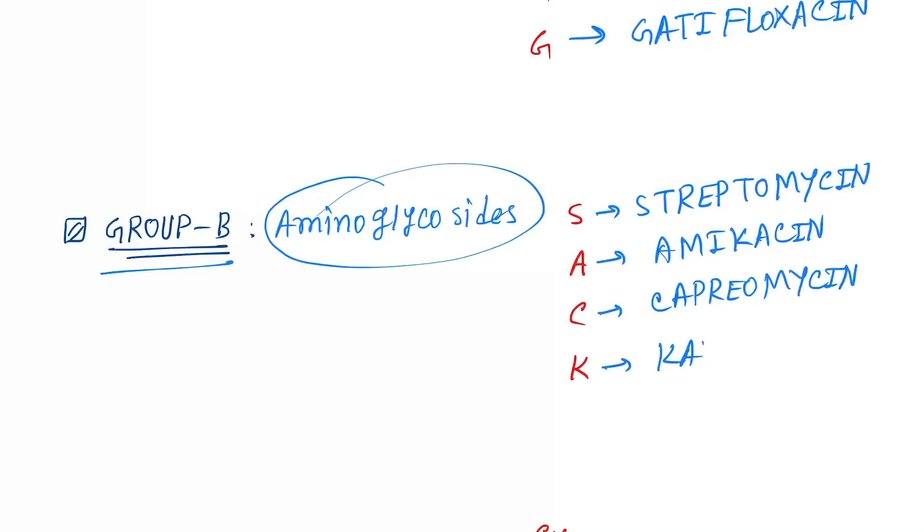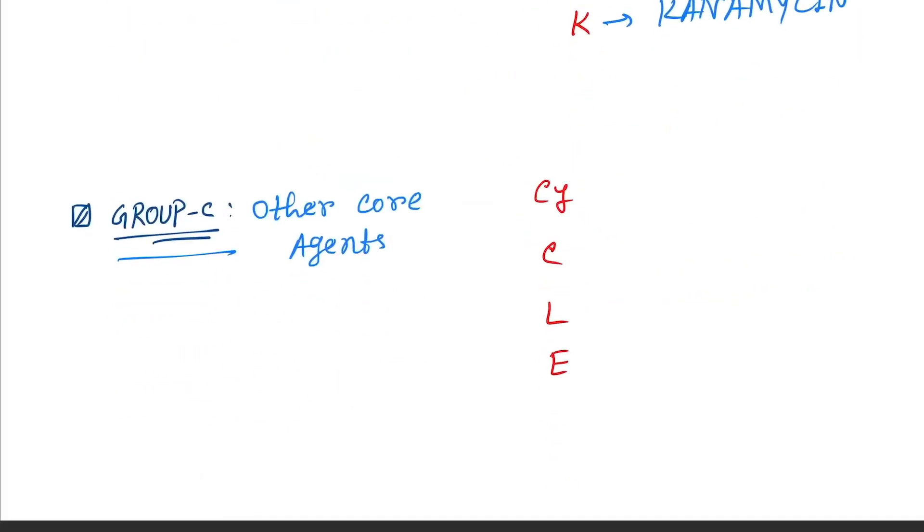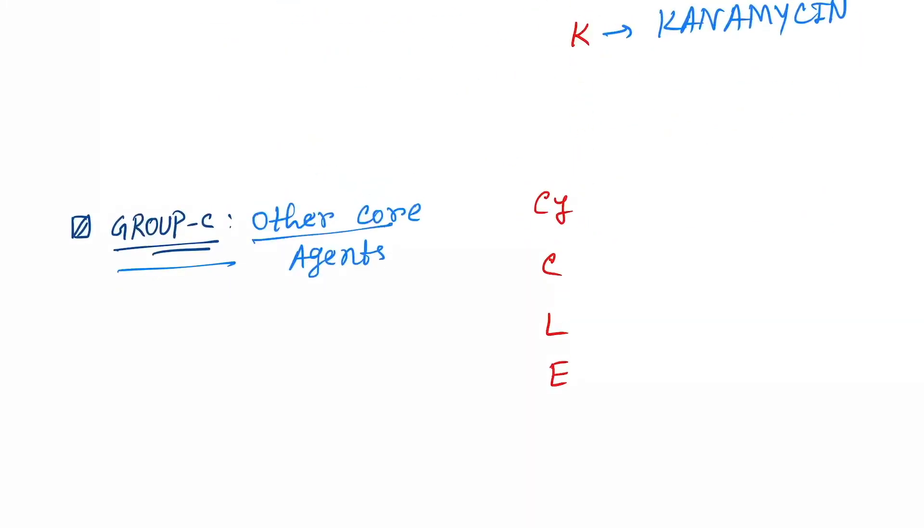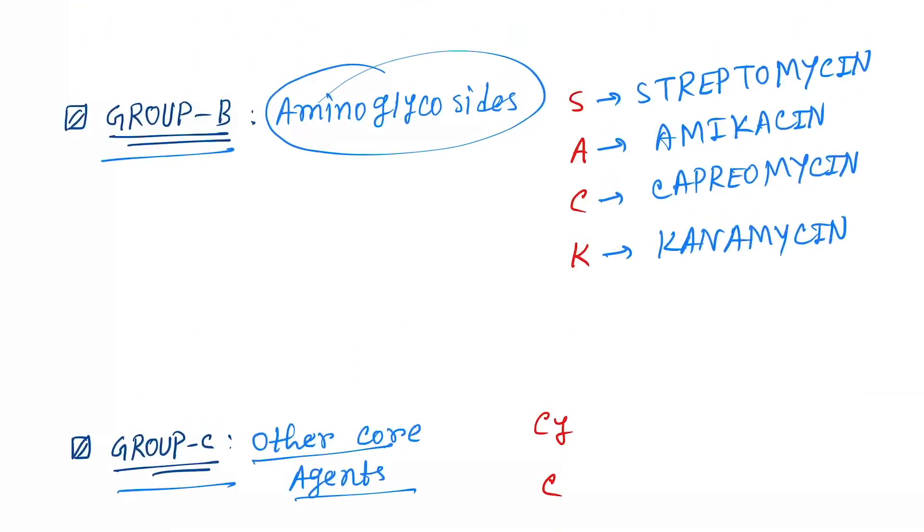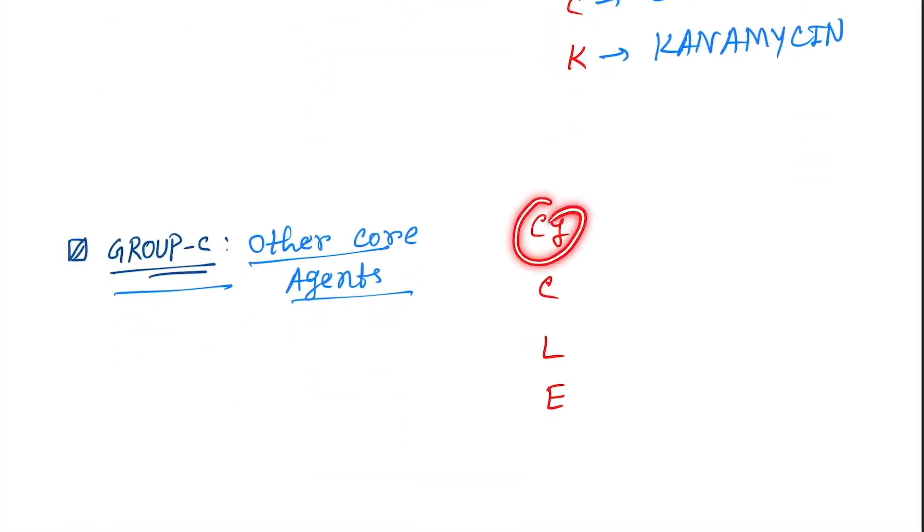Now come to group C. There are other core agents. Here you have to remember the mnemonic is SACK, and here the mnemonic is CYCLE.